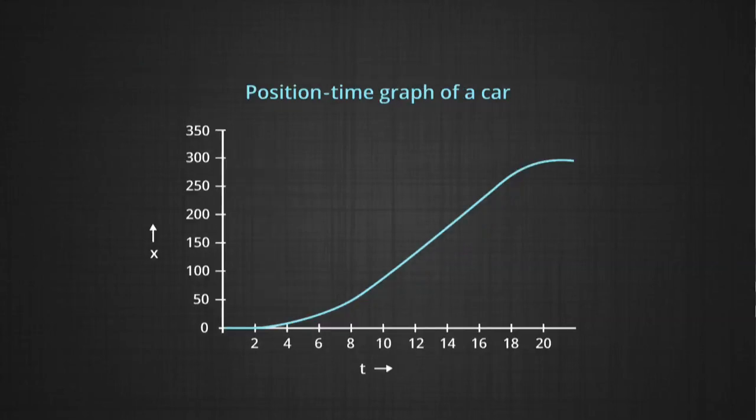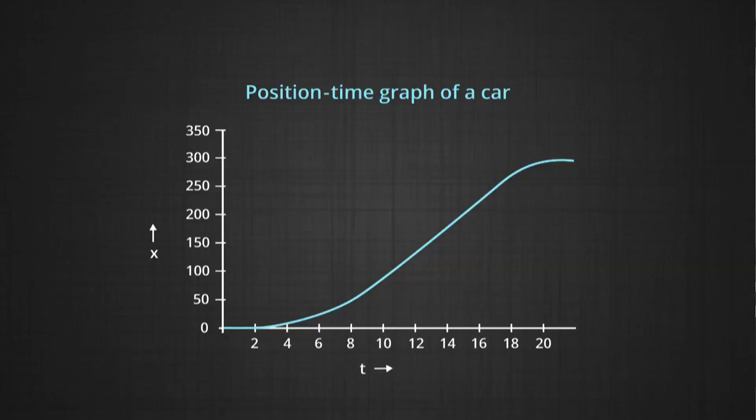Let us look at a position-time graph for a car. The car first accelerates, then moves with a steady speed, then acquires a fixed velocity on a highway. It may slow down and change speed as it moves. On this graph, notice that in the first 4 seconds barely any distance is covered, but by around 18 seconds the distance traveled is about 200 meters.